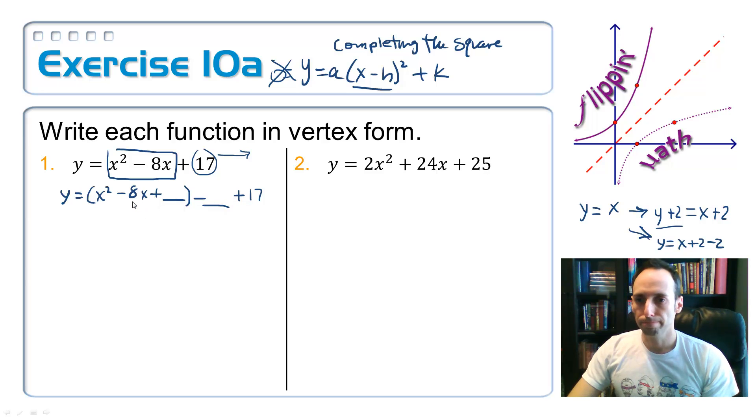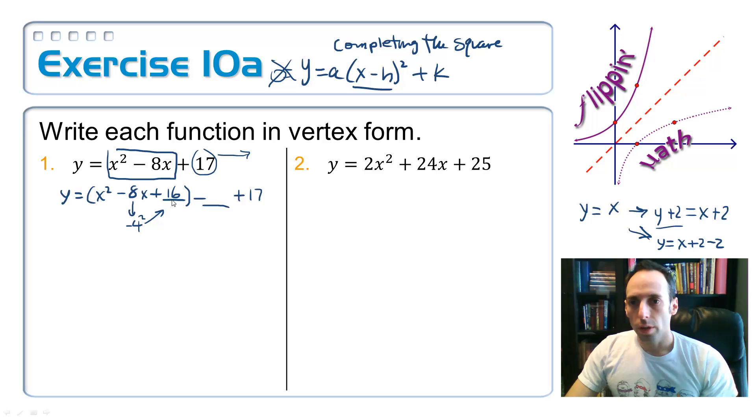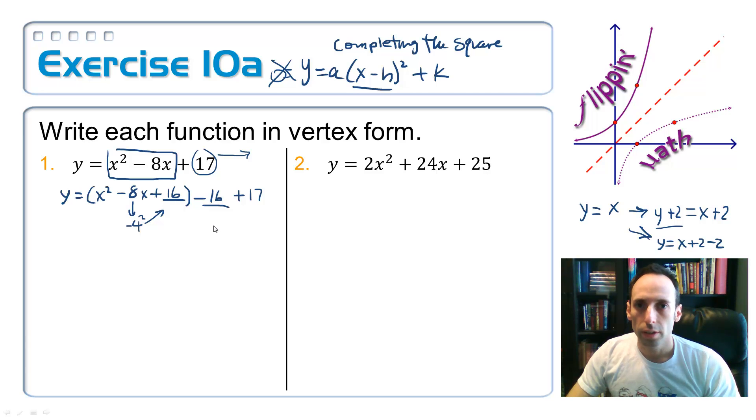So now let's complete the square. Take half of that, I get negative 4, square it, and I get 16.